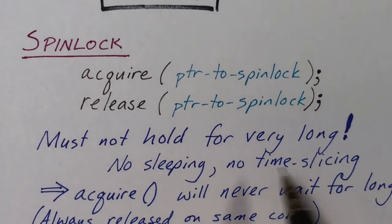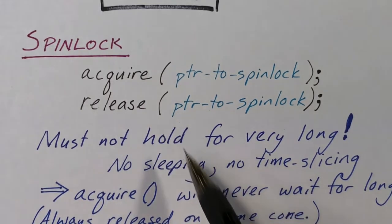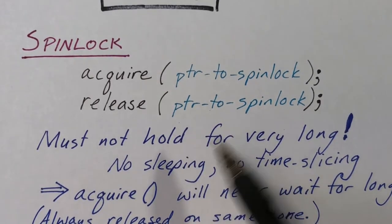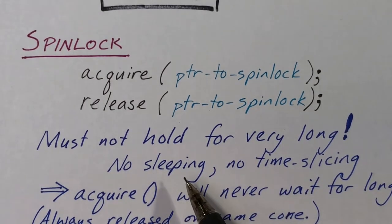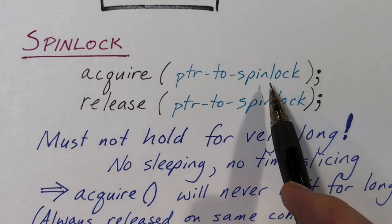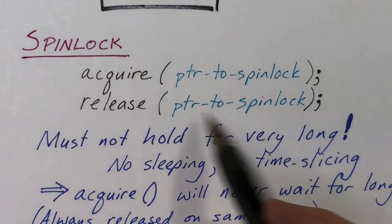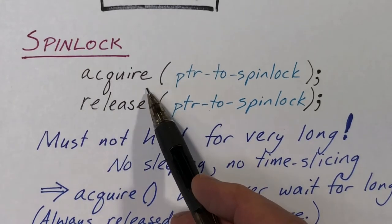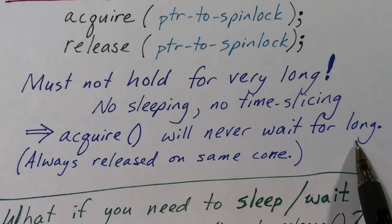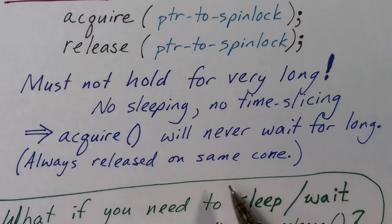The key with the spin lock is that it must not be held for very long. Between the acquire function and the release function, you are not allowed to go to sleep, so there's no time slicing. The acquire function will loop in a tight loop waiting for the lock to be released. This is very practical on multi-core systems because another core will release the lock quickly. So the busy loop inside acquire won't have to wait long, and the release will always be performed on the same core that did the corresponding acquire.